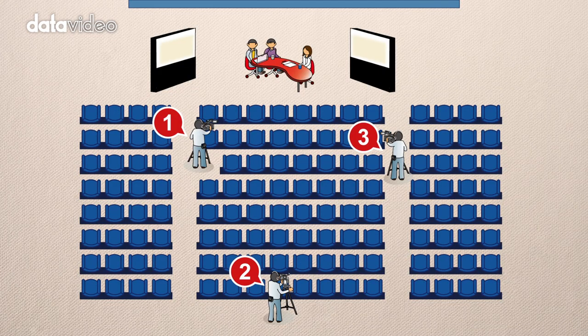Next, let's talk about talk shows. We will set up the three cameras in a triangle. If you face the stage, we will put the first camera on the left side, the second one in the middle, and the third camera on the right.